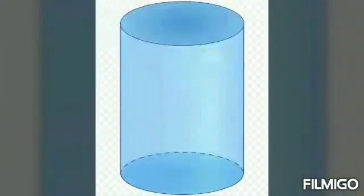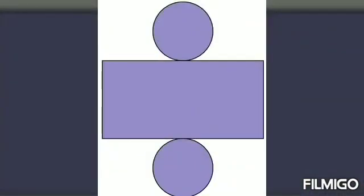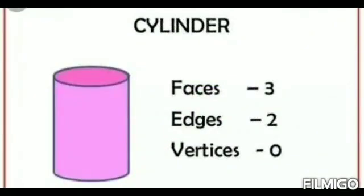Next, we see about cylinder. In a cylinder, there are two plane surfaces and one curved surface. There are two edges and no vertex. The base and top of the cylinder are of the same shape and size.